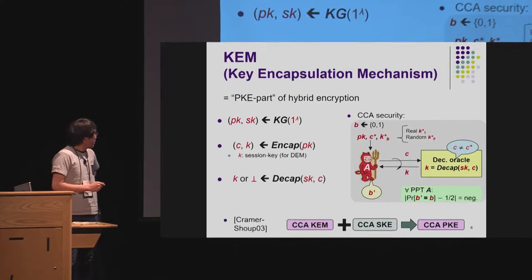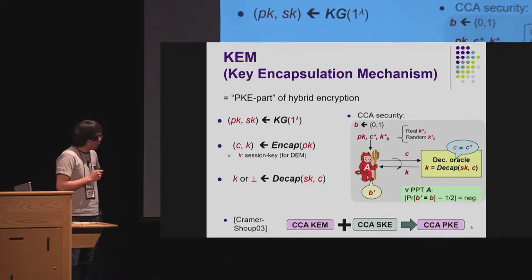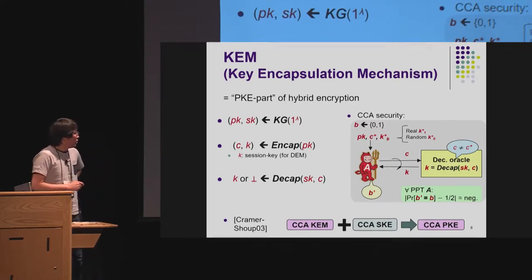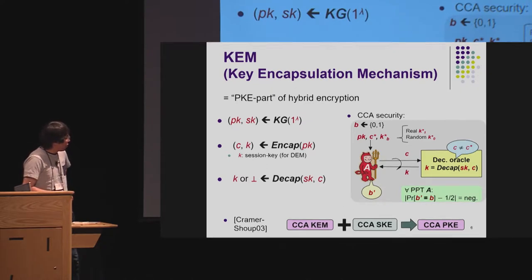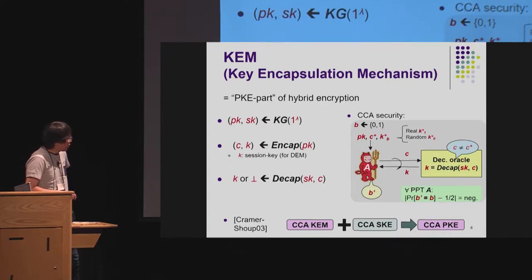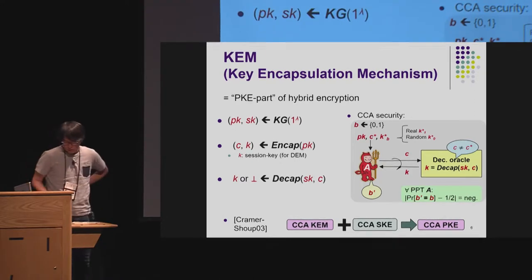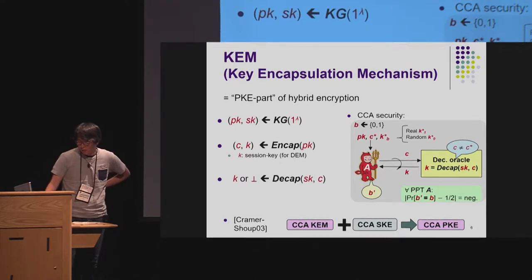Cramer and Shoup showed a very useful result: we can construct CCA-secure PKE from the combination of CCA-secure KEM and CCA-secure SKE. Since SKE can be easily constructed, we only need to focus on the construction of KEMs.